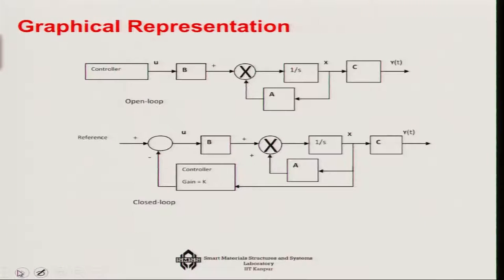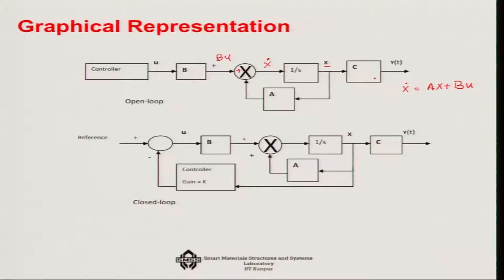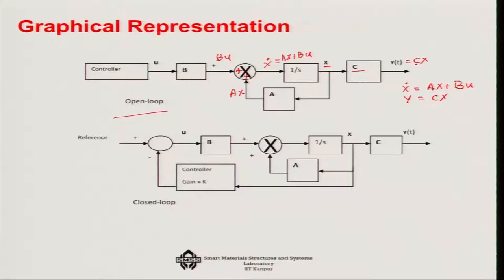This representation is x-dot equals Ax plus Bu. Suppose Bu is added here, and you consider it to be x-dot. Then a 1/s integrator will make it x, and with pre-multiplication by A it becomes Ax. So this gives us x-dot equals Ax plus Bu — the transfer function in open-loop form. And also y equals Cx, so this is the block diagram graphical representation of the system.